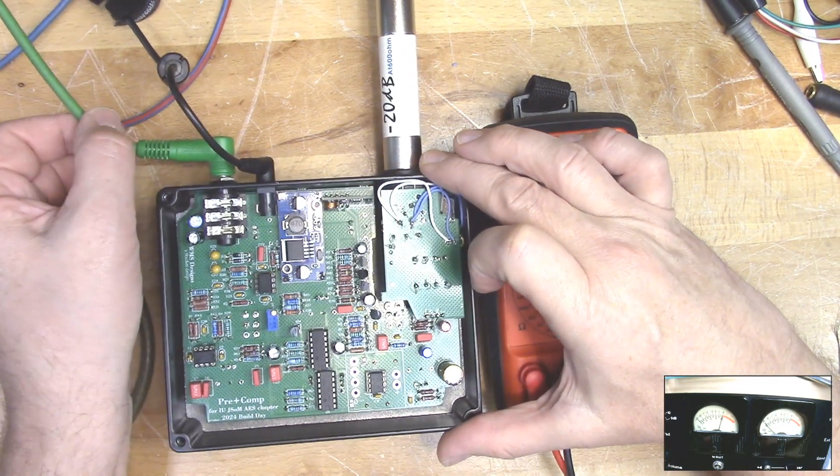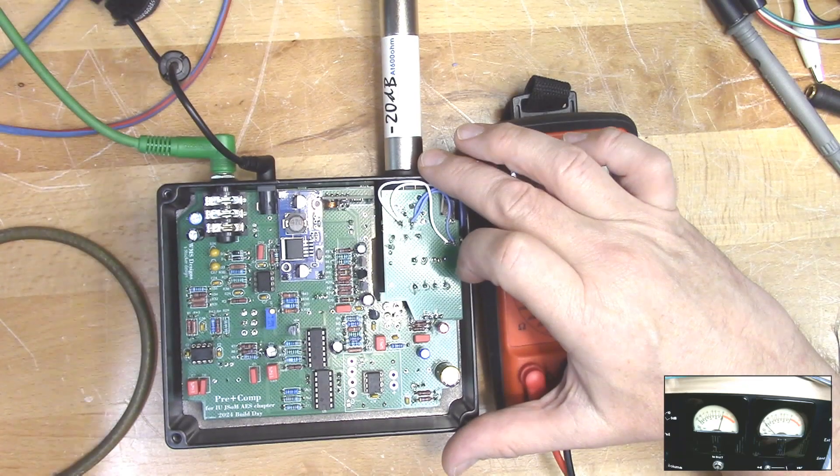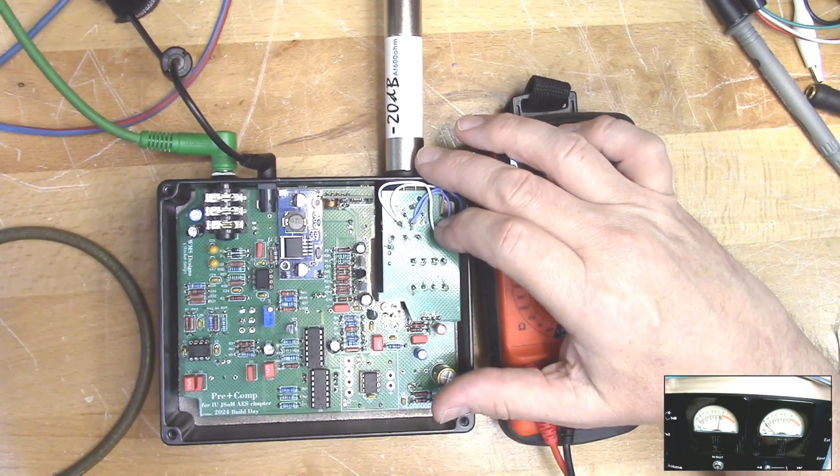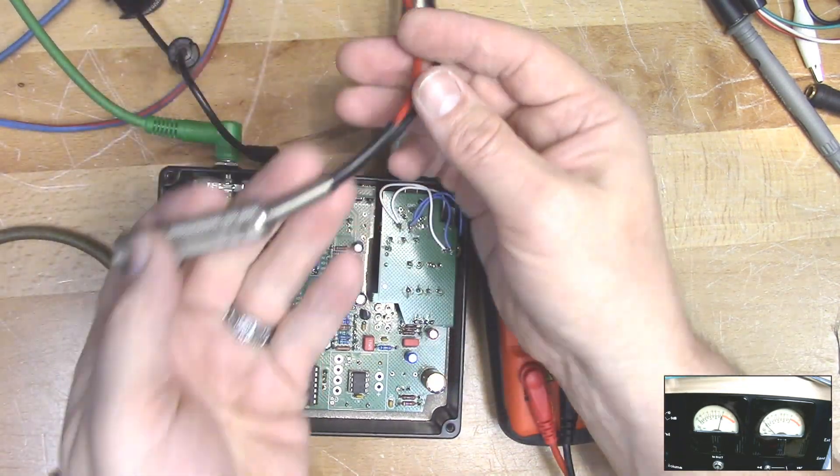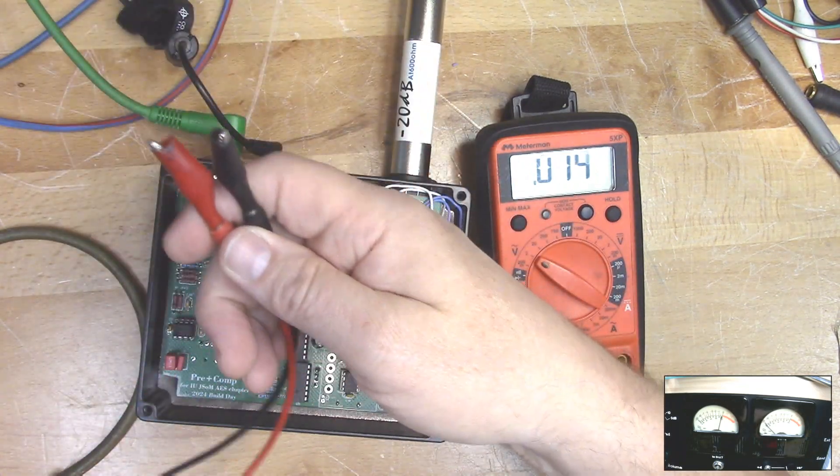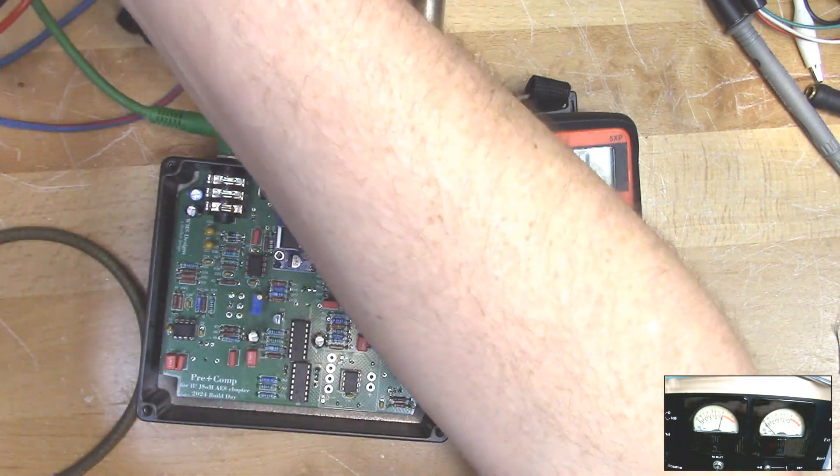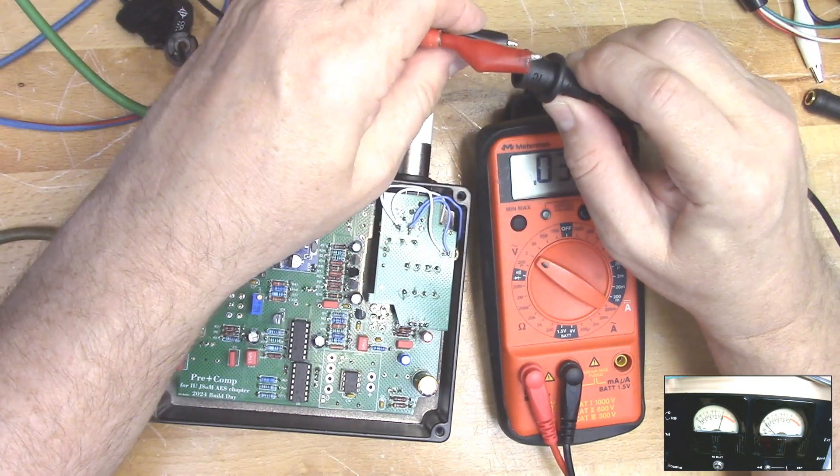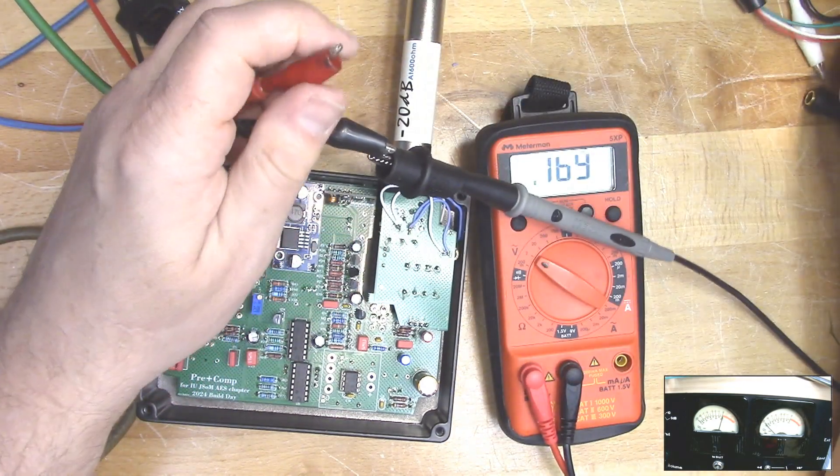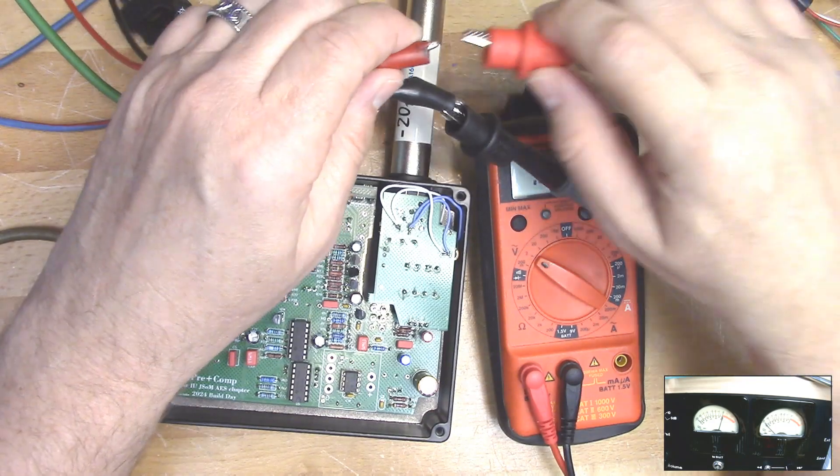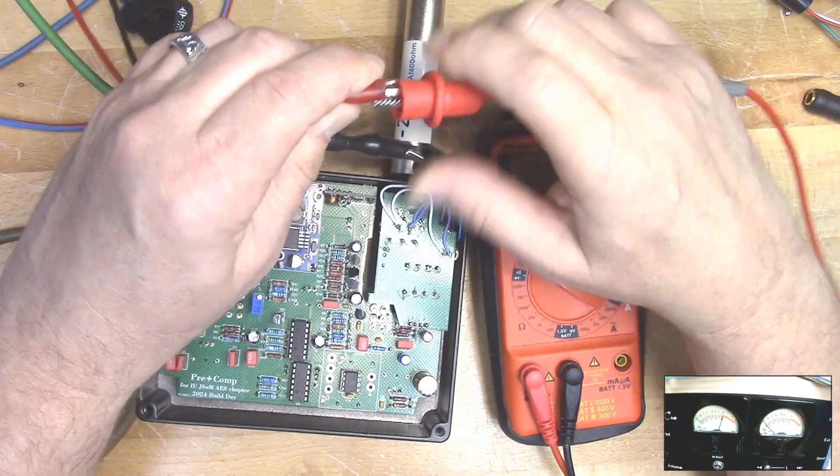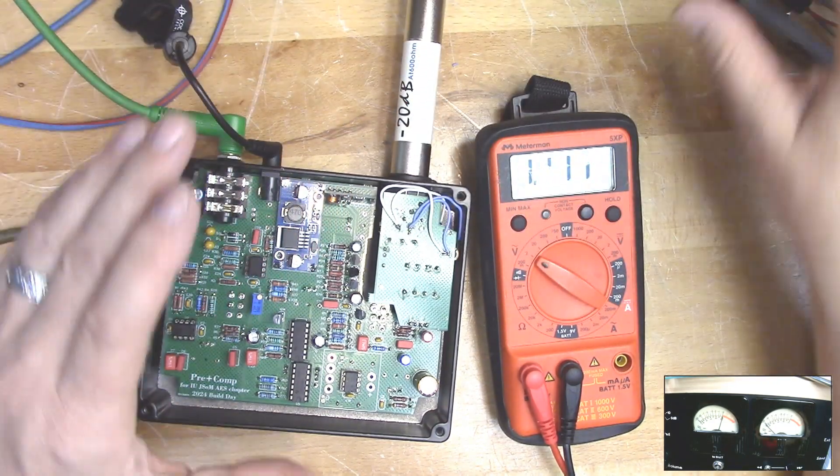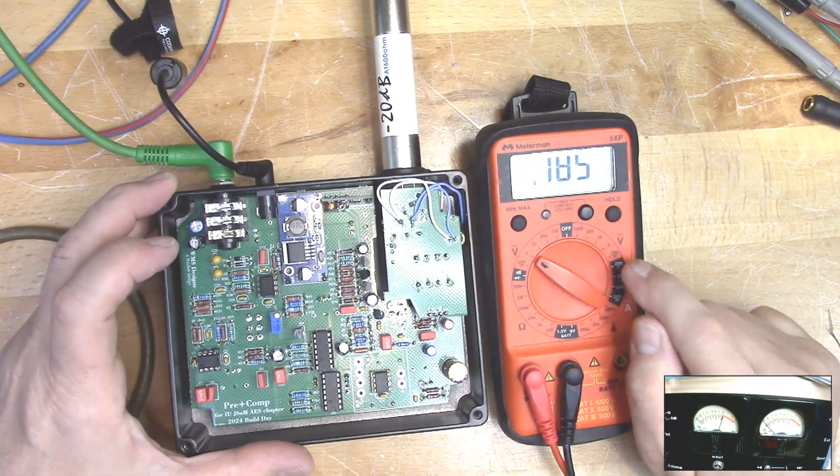Then I've got my output connected to a different adapter I have. It allows me to go from quarter inch to alligator clips and then connecting that to my meter. So now I'm measuring the output level of my pre-amp compressor with the meter.